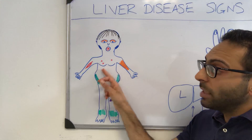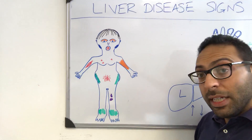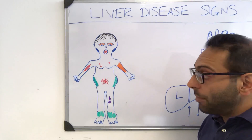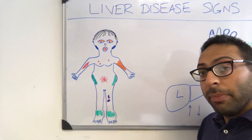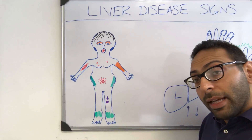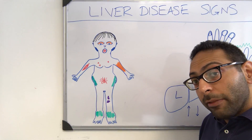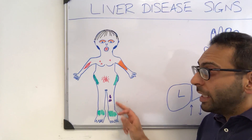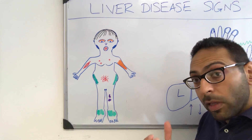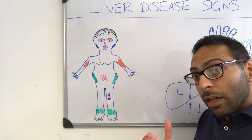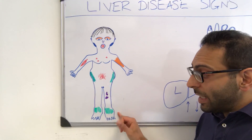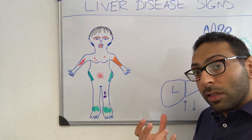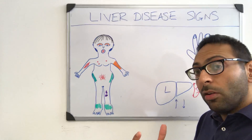You can get gynecomastia, ascites or build-up of fluid in the abdomen, and caput medusae — dilated umbilical veins. Testicular atrophy can occur, along with purpura or bruising on any part of the skin, and ankle swelling or oedema.